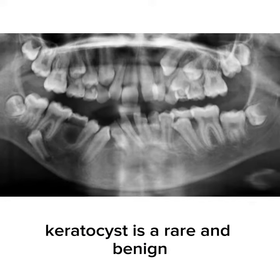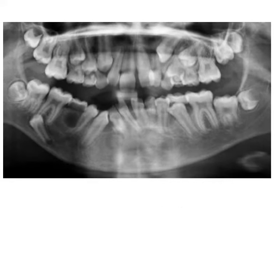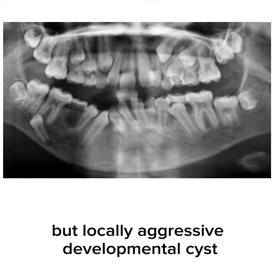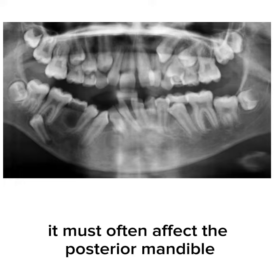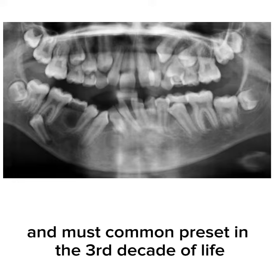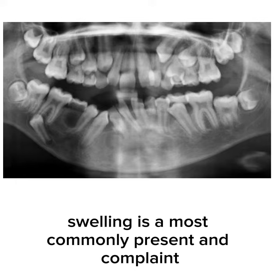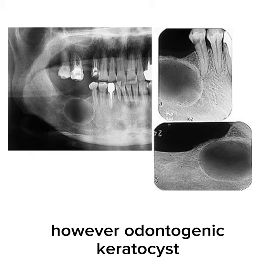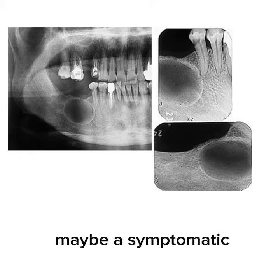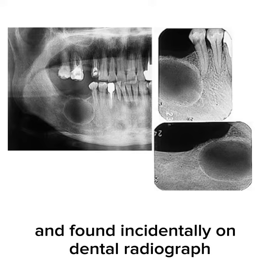Odontogenic keratocyst is a rare and benign but locally aggressive developmental cyst that can cause tooth displacement or resorption. It most often affects the posterior mandible and most commonly presents in the third decade of life. Swelling is the most common presenting complaint. However, odontogenic keratocyst may be asymptomatic and found incidentally on dental radiograph.